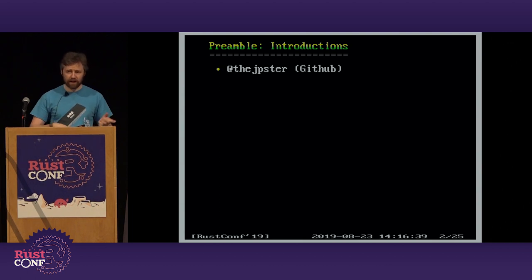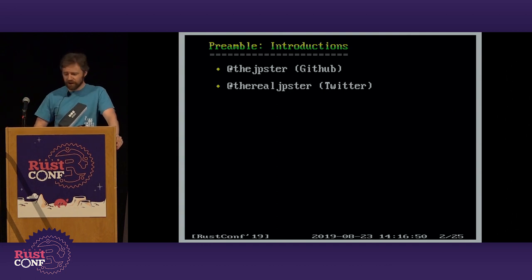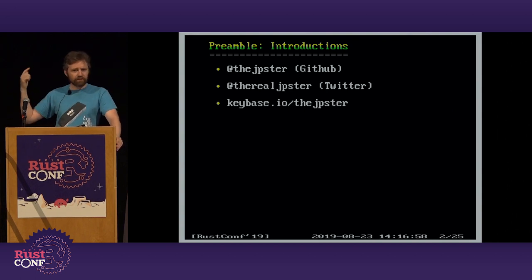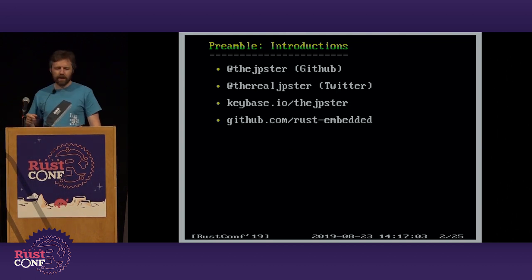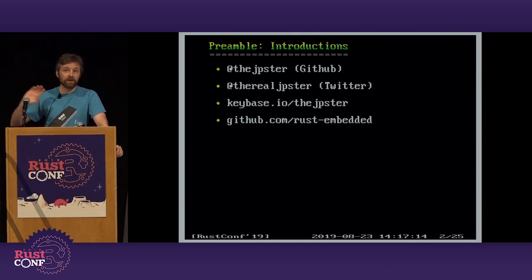You can find all of my code on GitHub where I am 'jpster'. I tweet a lot these days, but I came to Twitter relatively late, so on Twitter I am 'the_real_jpster' because somebody took 'jpster' before me. Don't ask that person Rust questions — I'm pretty sure they can't help. You can find cryptographic proofs that prove I am who I say I am at Keybase, which is a great service. I belong to the Rust Embedded Working Group, and you can find all of the embedded working group materials on github.com/rust-embedded.